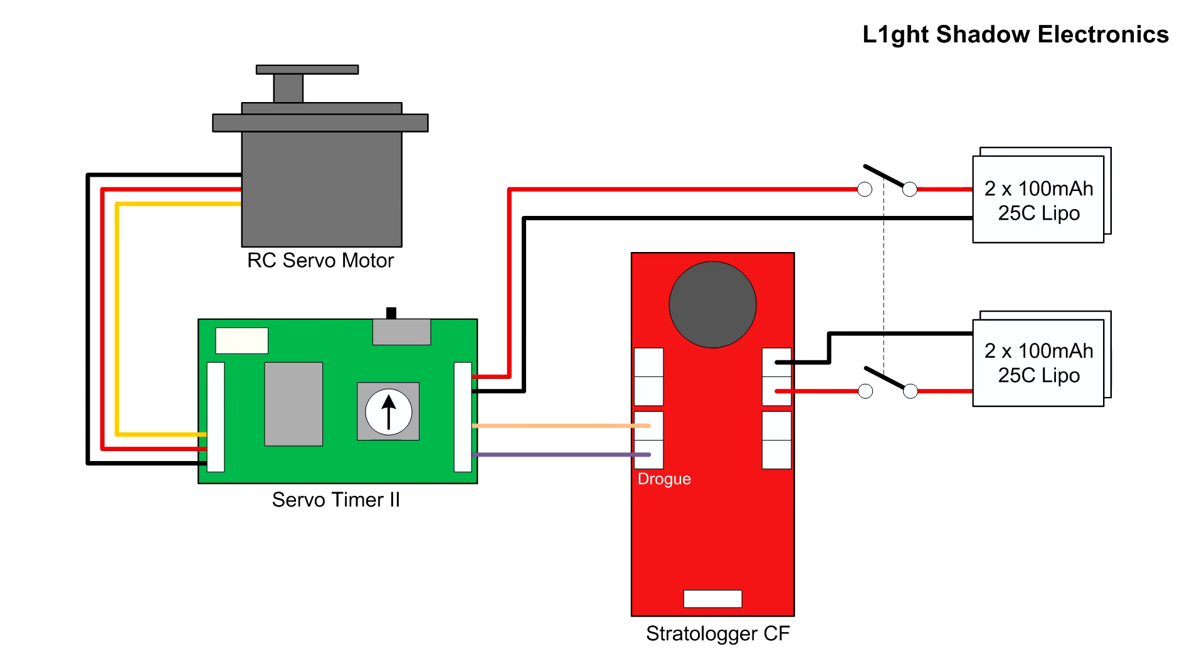A quick suggestion by PerfectFlight's tech support was to add a 220 ohm resistor across the input. This would allow the Stratologger to pass its continuity check but the voltage drop across the resistor wouldn't be enough to trigger the timer.